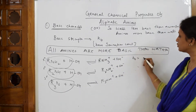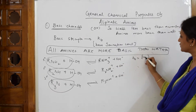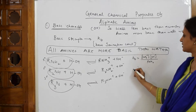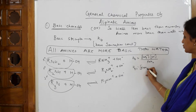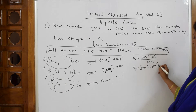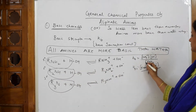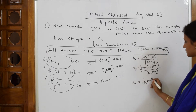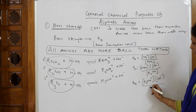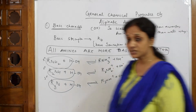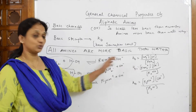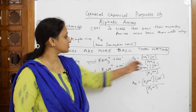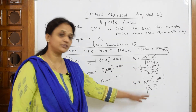Writing the Kb expressions: for primary amine, Kb = [RNH₃⁺][OH⁻] / [RNH₂]; for secondary amine, Kb = [R₂NH₂⁺][OH⁻] / [R₂NH]; for tertiary amine, Kb = [R₃NH⁺][OH⁻] / [R₃N]. I have written three base ionization constants — for primary, secondary, and tertiary amines — and these give us different values.